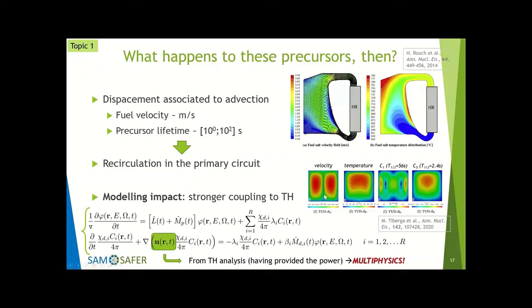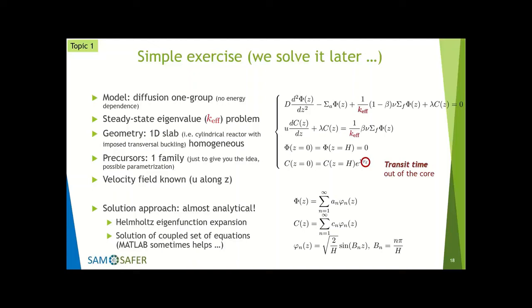The longer it takes for precursors to decay, the more time they have to travel. All of this multiphysics will be covered in module three in October. For basic purposes, you can solve the neutronic problem in the simplest way: diffusion one-group (no energy dependence), steady state for criticality, simple slab geometry, homogeneous material, and only one family of precursors. The velocity field is considered known — the simplest formulation, solvable almost analytically.